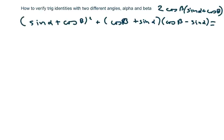Hi everyone, we're going to verify trig identities with two different angles, namely alpha and beta.